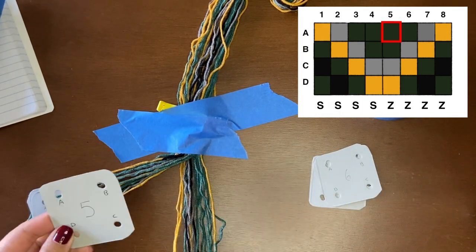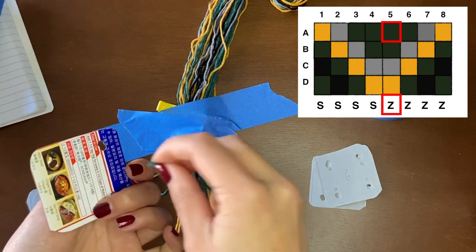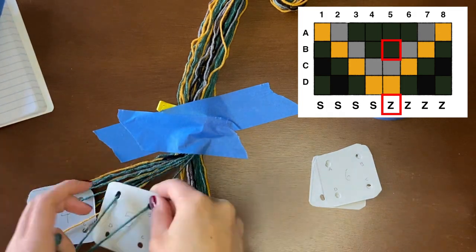For cards from 5 to 8 the logic is the same, but since the letter at the bottom is now Z instead of S, the pattern tells us to thread the yarn from the back side of the card instead.